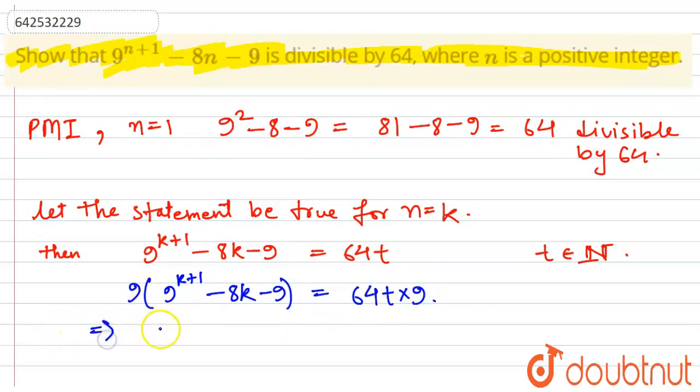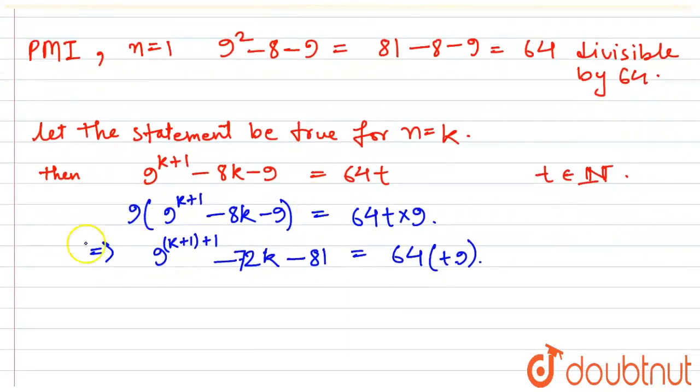this becomes 9(9^(k+1) - 8k - 9) equals 64t × 9. This would imply 9^(k+1+1) - 72k - 81 equals 64 × t × 9. I am just multiplying 9 throughout, nothing special. Whatever is special will be done now.